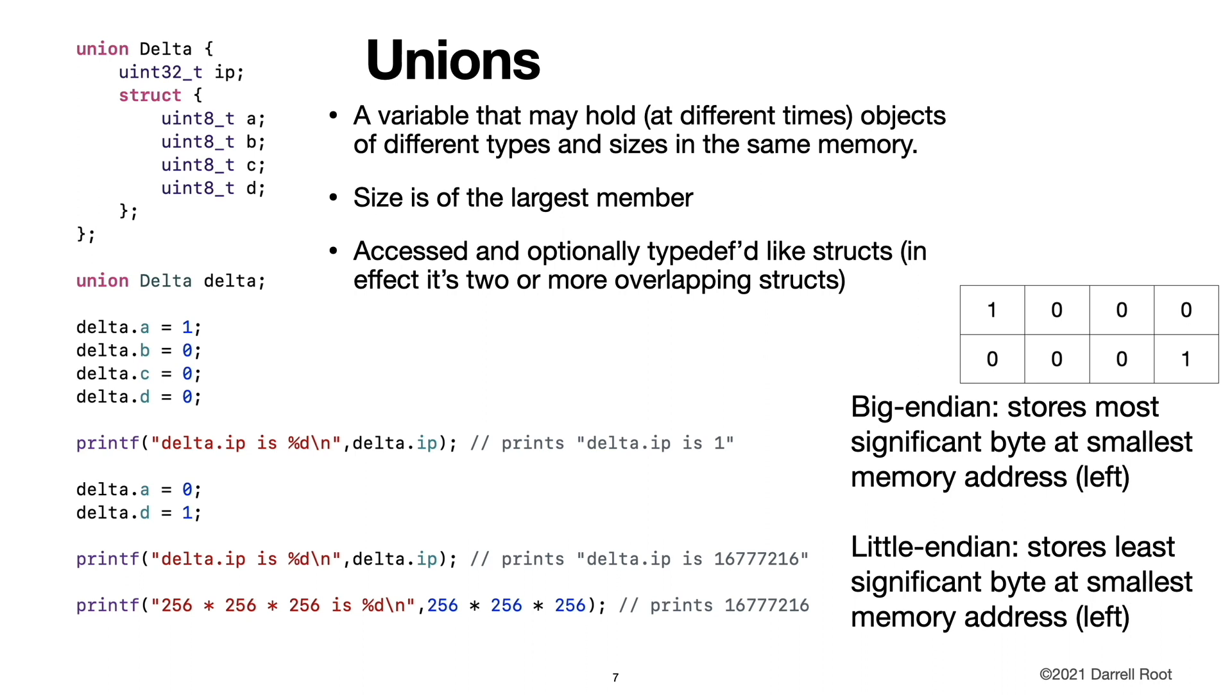So here we create delta, which is a variable of type union delta. And then we assign the memory so that the lowest memory location, which is the first listed, the first octet or the first byte is one, and then the other bytes are zero. And then we print out the value of the unsigned 32-bit integer. And on my platform, I got one. So here's the memory layout of the first union. I've set the first byte to one and then the others to zero.